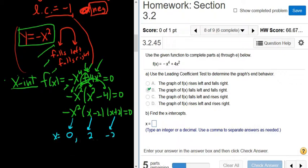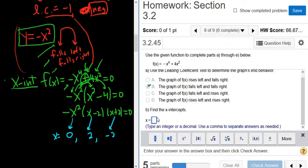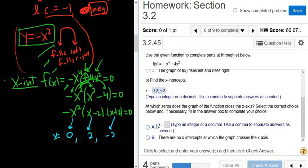And all of these are x values, right? Let's go ahead and type those in. Those are the x-intercepts. So we have 0, 2, and negative 2. Beautiful stuff.